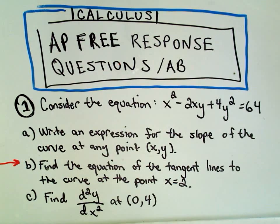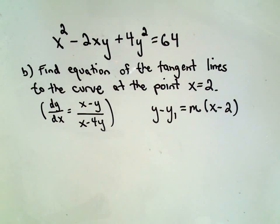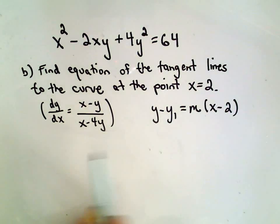Okay, this is going to be the second part, part B of my Calculus 1 question from the AP AB free response questions. And question 1, part B says, find the equation of the tangent lines to the curve, this given curve, x squared minus 2xy plus 4y squared equals 64, when the x coordinate equals 2.